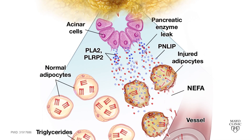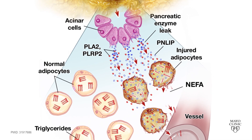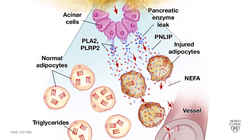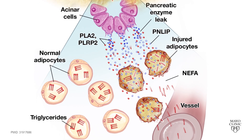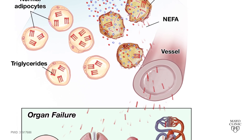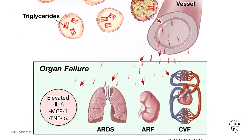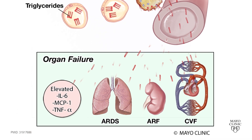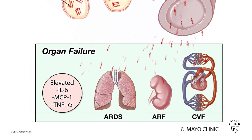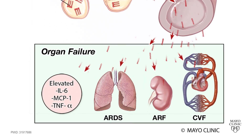Like oleic acid, shown here in these red zigzag lines. These NEFA, or non-esterified fatty acids, can then cause severe inflammation, elevate serum cytokines, and cause multisystem organ failure.